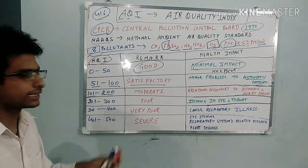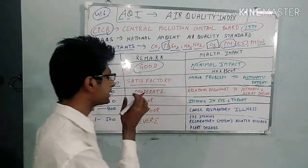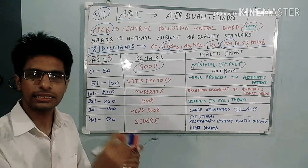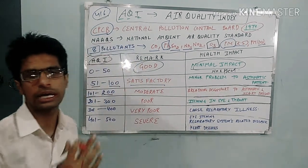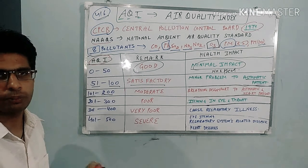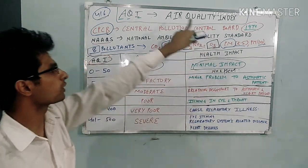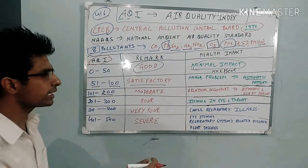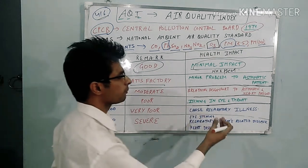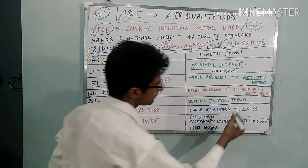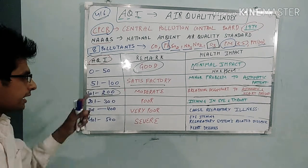The range 101 to 200 is 'Moderate.' At this level, breathing discomfort starts — but only for asthmatic patients or those with heart disease, not for healthy individuals. This is why older people are more vulnerable to high AQI. This is also the reason the government declares school holidays and advises people to stay home.